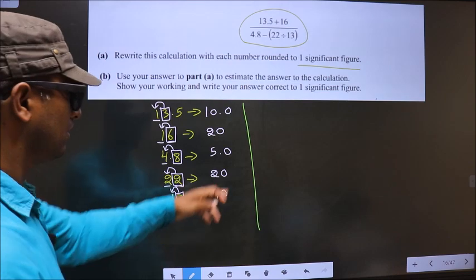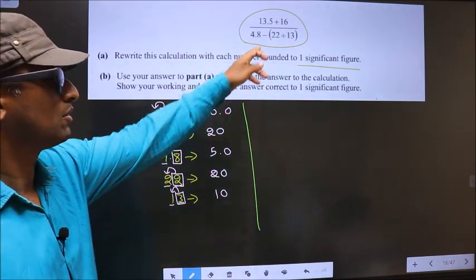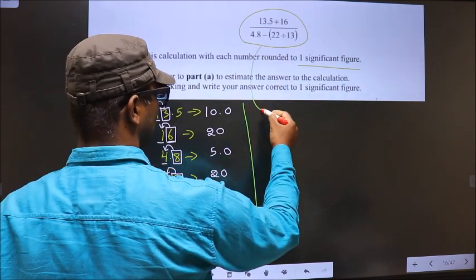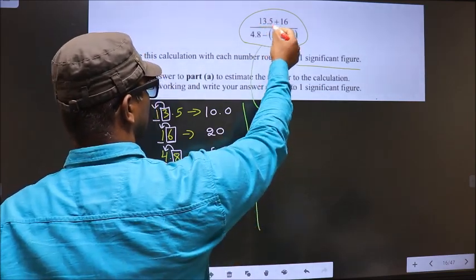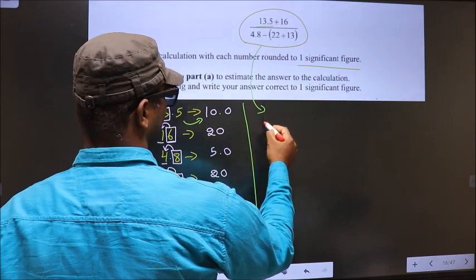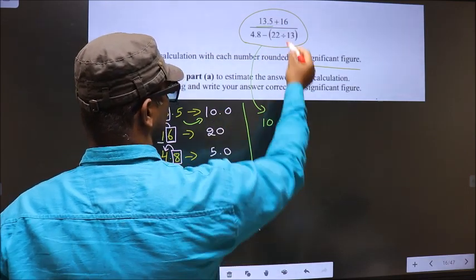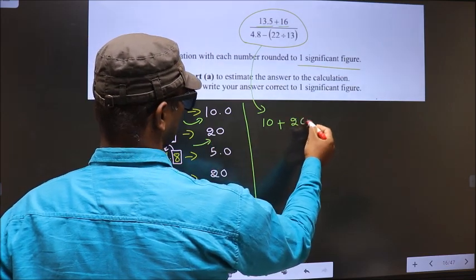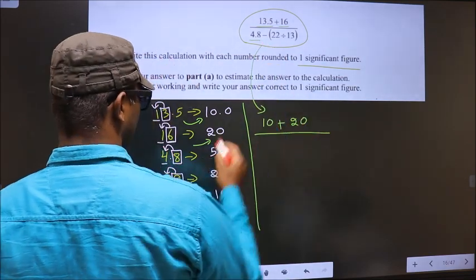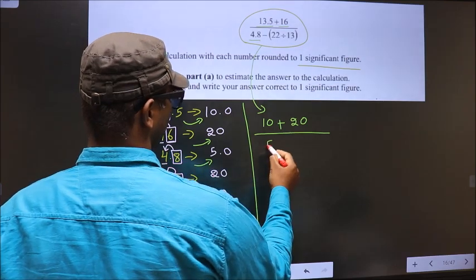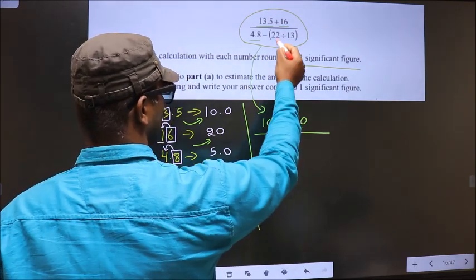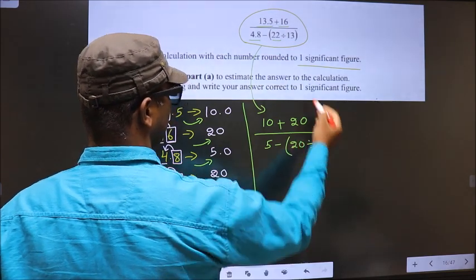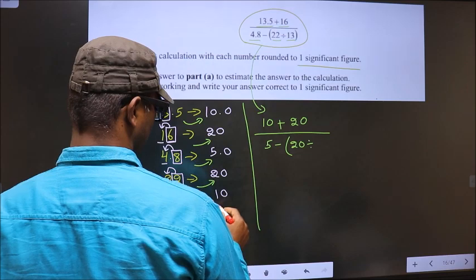Now, we should use these values over here. So now this will change to. In place of this, now you write 10. Plus, in place of this, 20. By, in place of this, 5. Minus, in place of this, 20. Divided by, in place of this, 10.